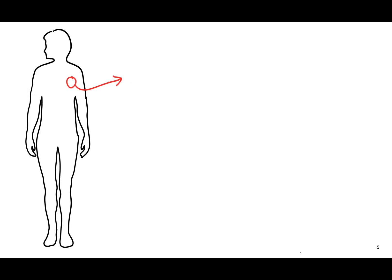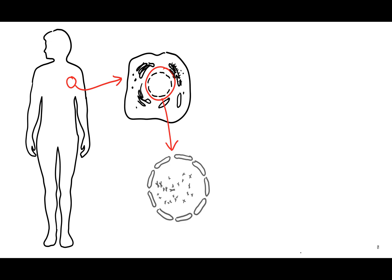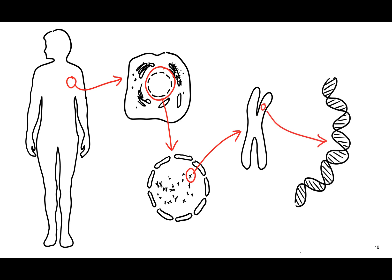So let's look at what the paper is based on and the background associated with it. We start with our bodies. These are made up of many different types of cells, and within each of these cells is a nucleus. This is where our genetic information is held in the form of DNA. DNA is made up of four building blocks, which we call bases: A, T, C and G, otherwise known as adenine, thymine, cytosine and guanine.